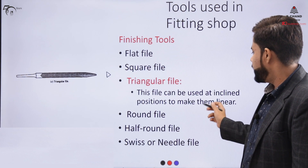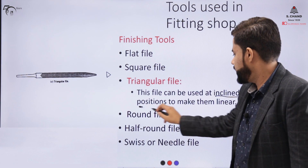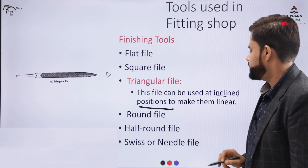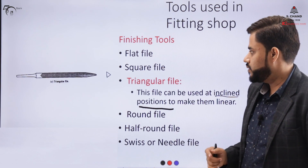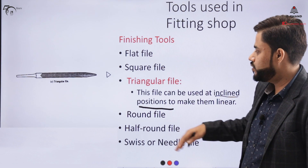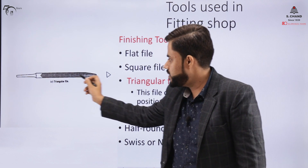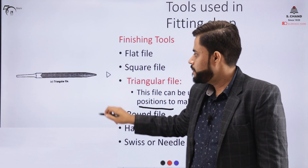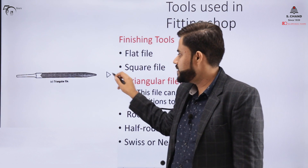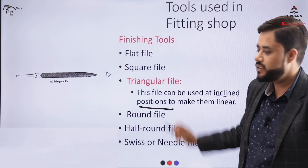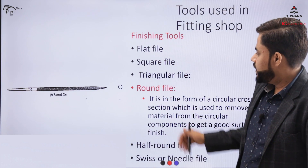The triangular file, as the name suggests, is used for components that are at an inclined position and need those inclined surfaces to be made linear. The cross-section visible in the side view is triangular, so it has a triangular surface — that is why it is called a triangular file.